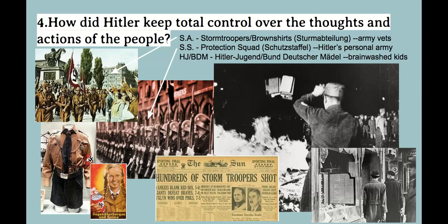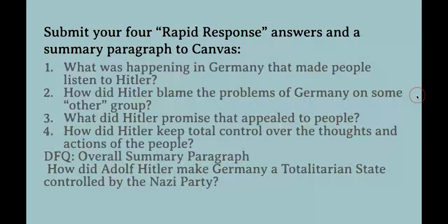Two more methods: book burning — the Nazis famously burned bonfires full of books that promoted tolerance, multiculturalism, respect for gay people, or communism. And Kristallnacht, the Night of Broken Glass, when Jewish businesses, homes, and synagogues were targeted for vandalism and arson — windows smashed, property stolen, people terrorized. Many Jewish people fled Germany in fear for their lives. That is how Hitler kept control over the thoughts and actions of the people.